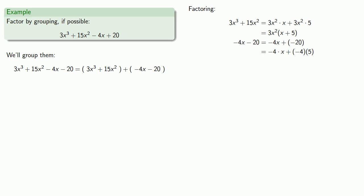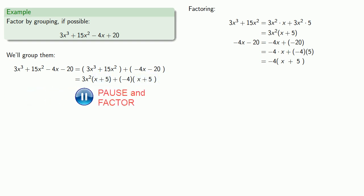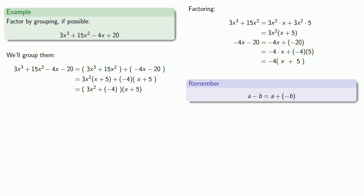Both of those terms have a common factor of minus 4, so we can remove that common factor. What's left over is x, a plus, and a 5. So the first pair of terms factors, the second pair of terms factors, and they both have x plus 5 as a common factor, so we can remove it. What was there before is still there: we had a 3x squared, we still have a 3x squared; we had a plus negative 4, we have a plus negative 4 — or using the fact that plus a negative is the same as minus, we have a minus 4.